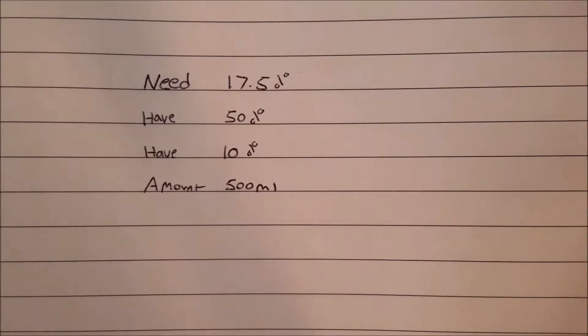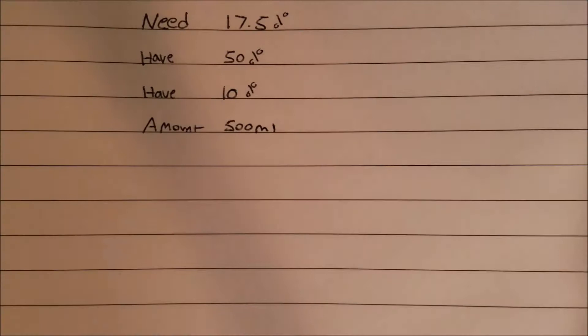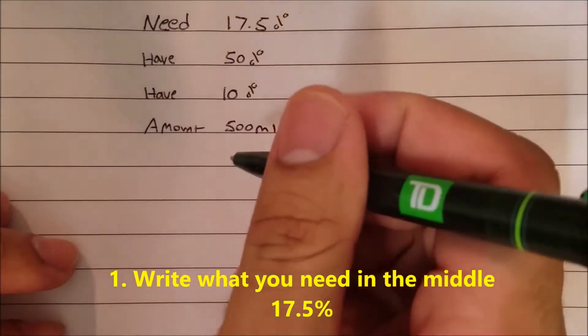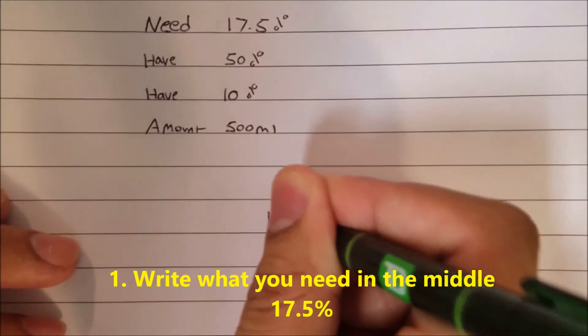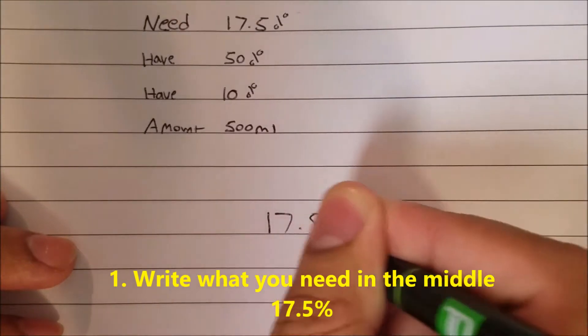The first step: we're going to write what we need in the middle. So we need 17.5%. Let me do that right here. 17.5%, that's what we need.